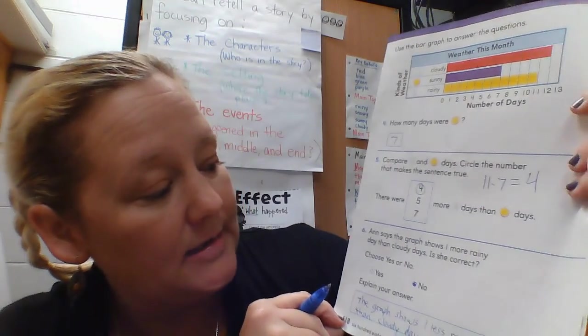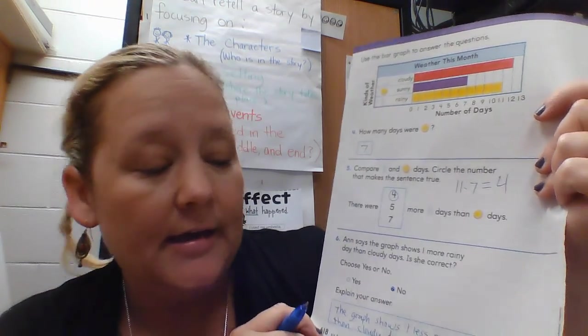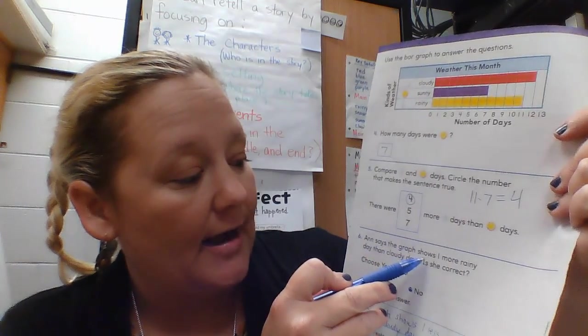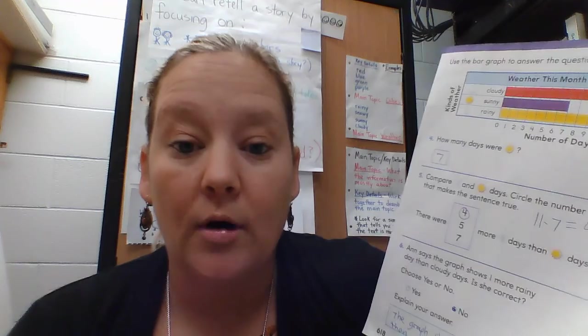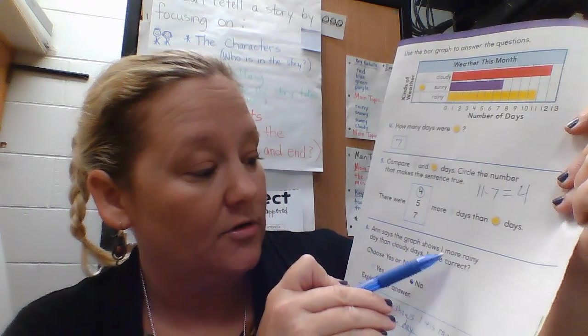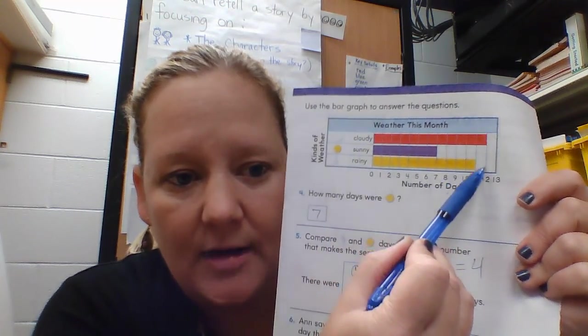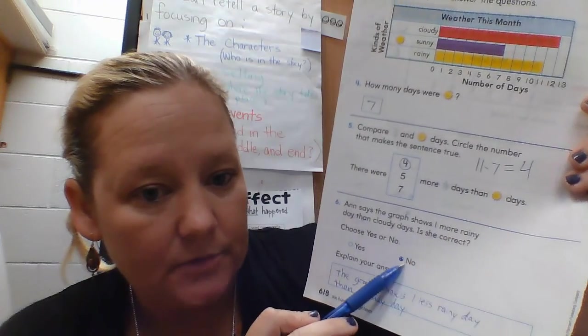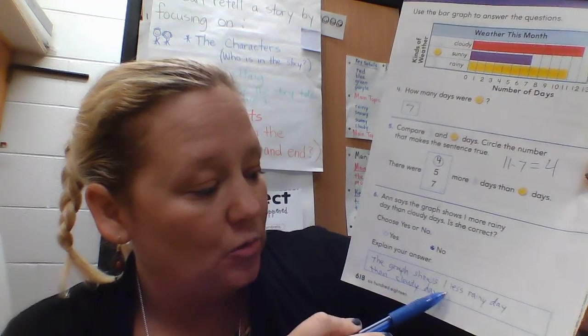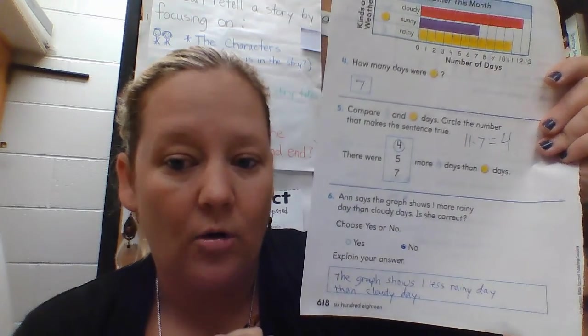Number six: Ann says the graph shows one more rainy day than cloudy day — is she correct? Circle yes or no. Ann thinks there is one more rainy day. So I look at rainy — rainy days has eleven. Now I follow the cloudy bar all the way across, and cloudy is twelve. The cloudy has twelve, the rainy has eleven, so Ann is wrong — rainy does not have more, cloudy has one more. Bubble no, and explain: the graph shows one less rainy day than cloudy day, not one more.